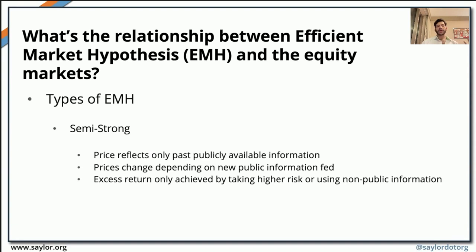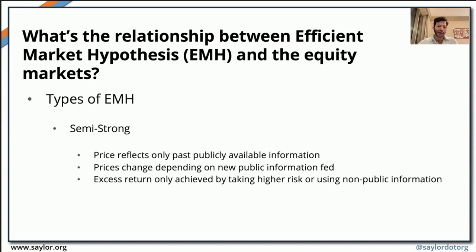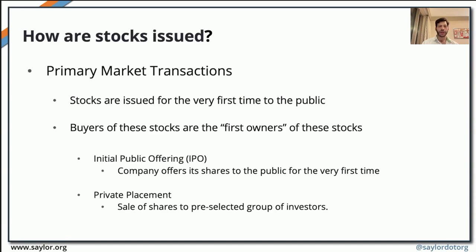In a semi-strong market, prices of securities are only affected by past publicly available data and information. Because of this, changes in price are very much dependent on the amount of new data being fed into the market. Making excess returns in a semi-strong market could be achieved by taking on higher risk or by using non-publicly available information. These are basically the measurements for gauging the strength or efficiency of a market or exchange.